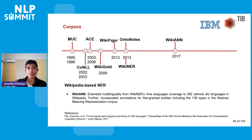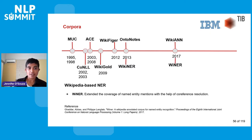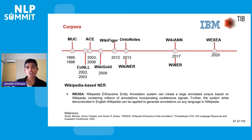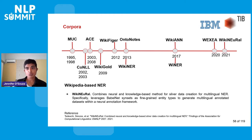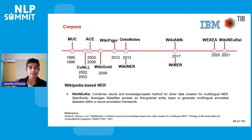The WikiNEL corpus extended multilinguality from WikiNER's nine languages to almost all languages in Wikipedia — roughly 282. The WINER corpus then extended coverage of named entity mentions with the help of coreference resolution, an added NLP component to increase coverage of recognized entities. Next came the Vexia corpus, creating a large annotated corpus based on Wikipedia with millions of annotations, again incorporating coreference signals.